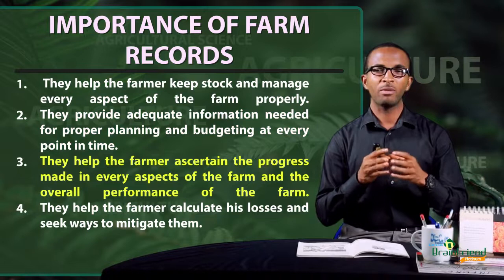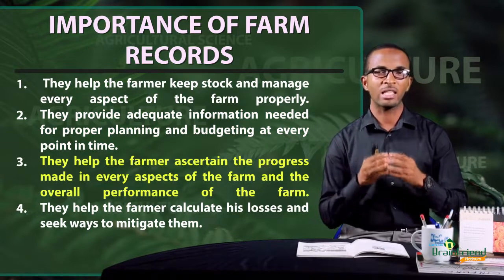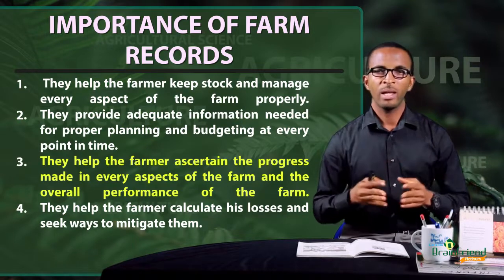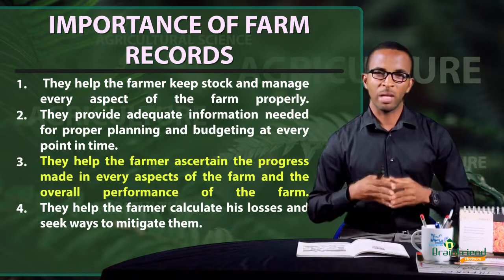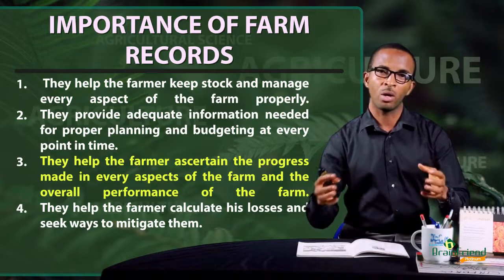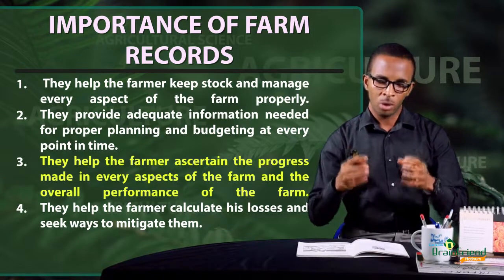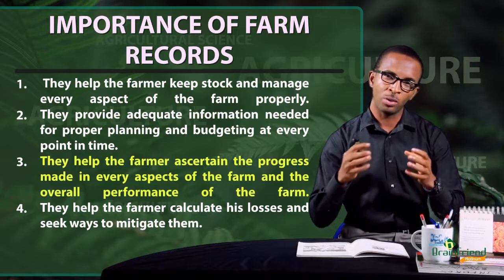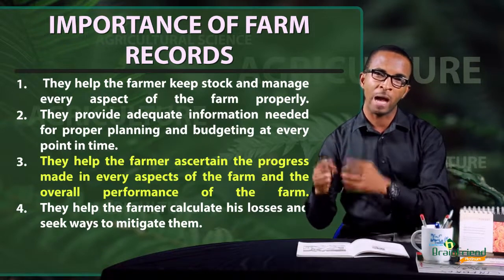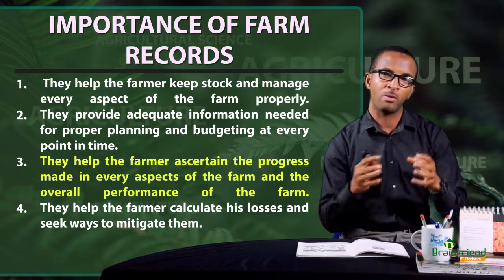Number three, farm records help the farmer to ascertain the progress made in every aspect of the farm and the overall performance of the farm. A farmer takes record of the activity happening on his farm, sits down, goes through those records, and notices areas in which progress has been made and knows which area is performing well.